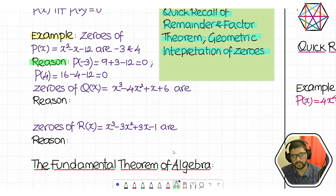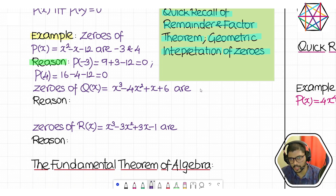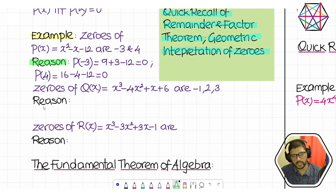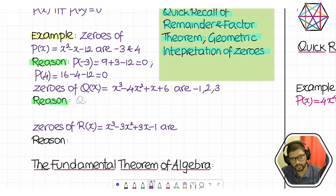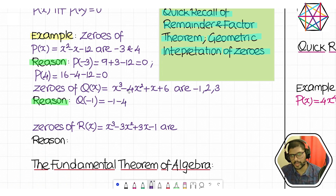Zeros of q(x) = x³ − 4x² + x + 6. The zeros are −1, 2, and 3. The reason is always simple: you replace x with that number, and if it gives you 0, then that number is called a zero. What is q(−1)? Cube of −1 is −1, minus 4 times square of −1 which is +1, so minus 4; replace x with −1 gives +6. So −1 − 4 − 1 + 6 = 0. It works.